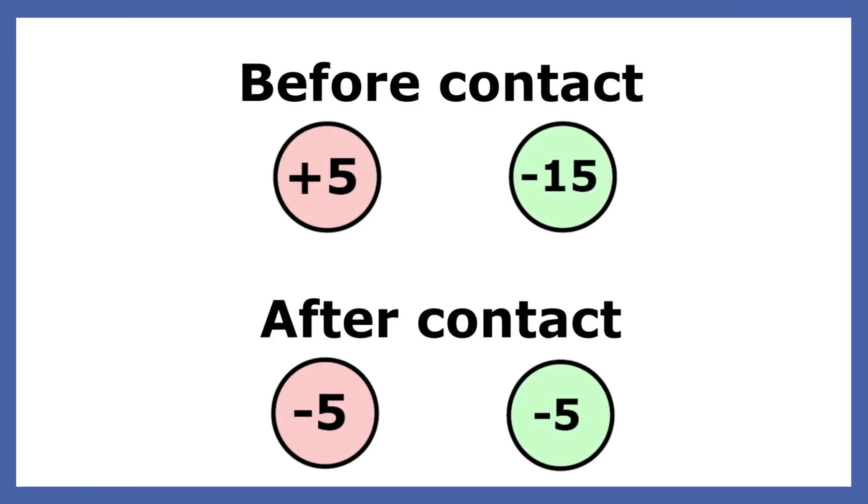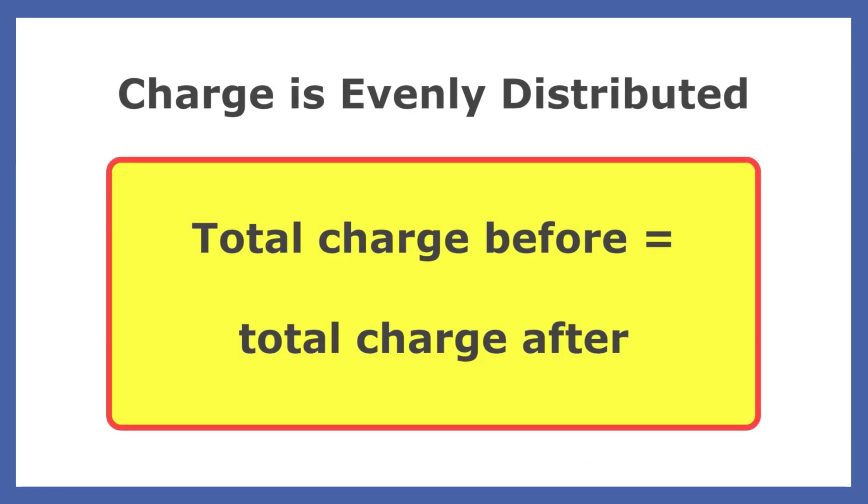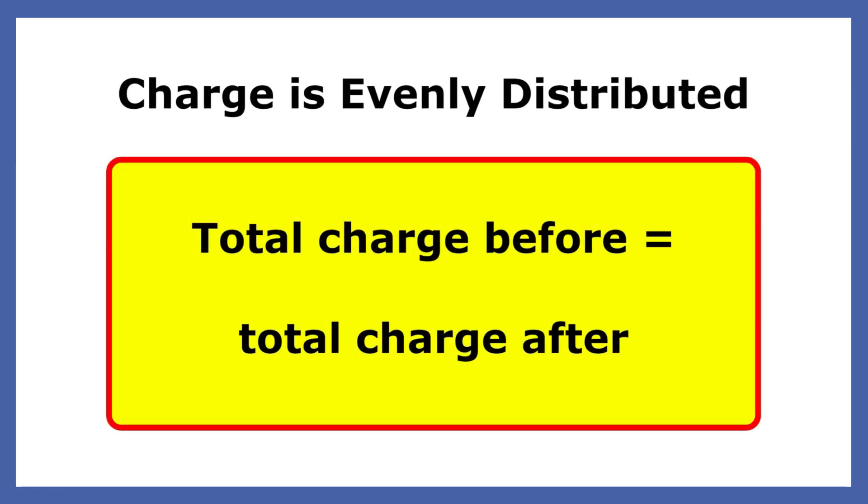To find the charge in each sphere after an interaction, we simply add the total charge and divide by the number of charges. In this case, we divide the total charge of negative 10 by 2 to get negative 5. Charge is distributed evenly.